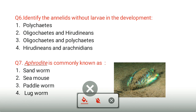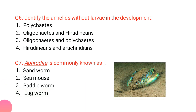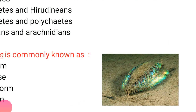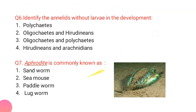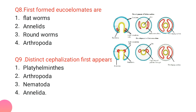Aphrodite is commonly known as the sea mouse. Once you see the diagram of Aphrodite, you will definitely remember it and never forget it. It is very easy to understand zoology or any subject with the help of diagrams, so don't forget to see the diagrams related to each particular topic.